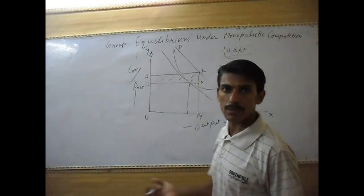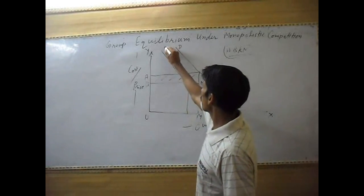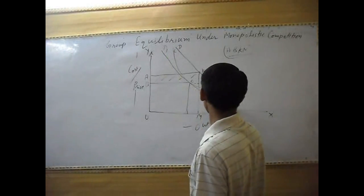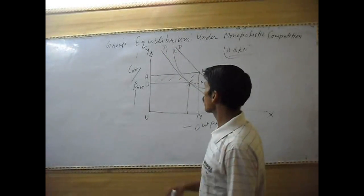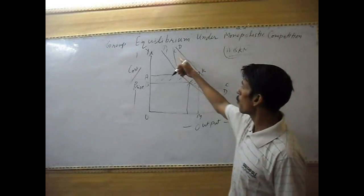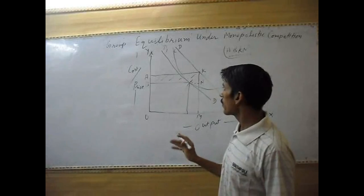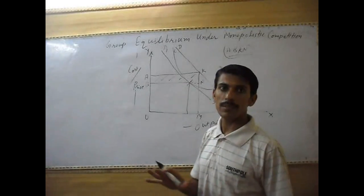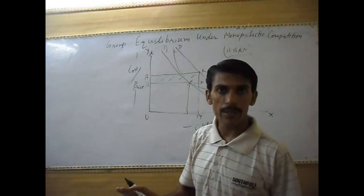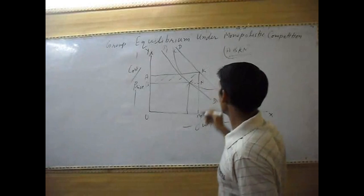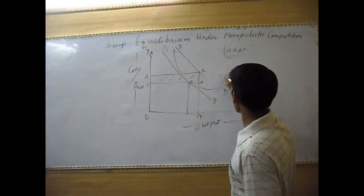At this point, the cost curve cuts the demand curve. At this point, the companies will not get super profit. The company will get at this point normal profit.